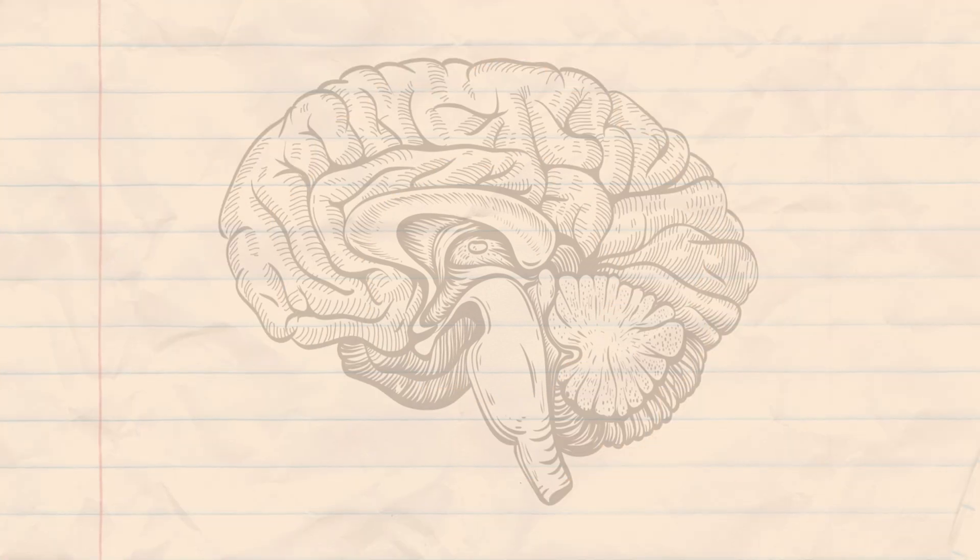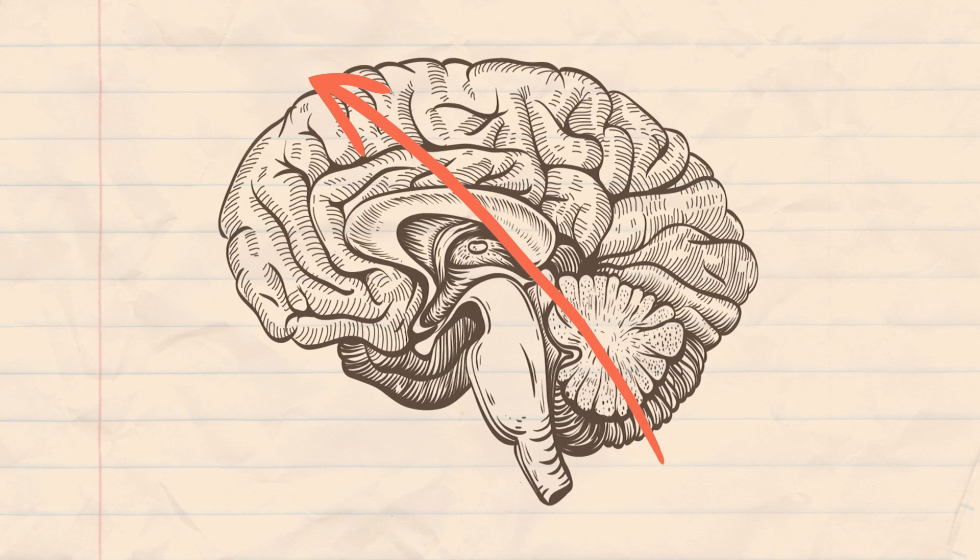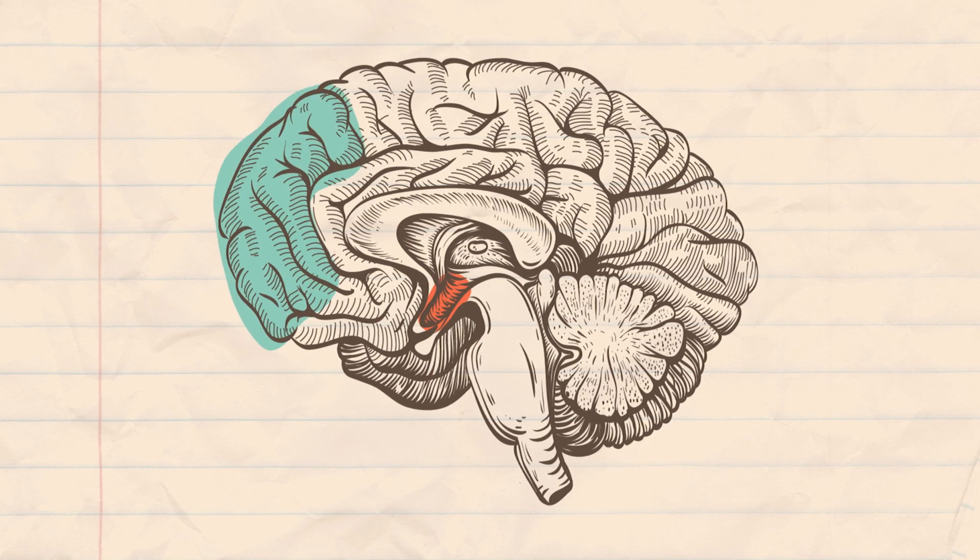The human brain develops and connects from bottom to top. During adolescence, two parts of the brain undergoing development are the amygdala and the prefrontal cortex.